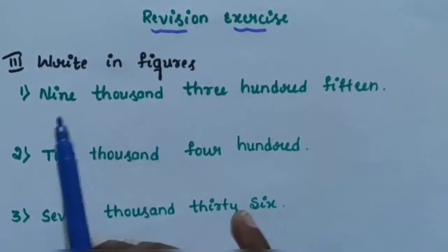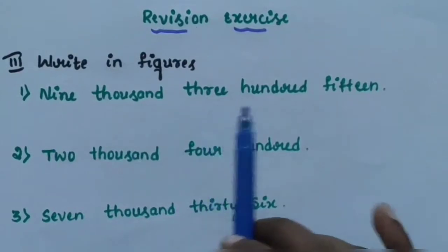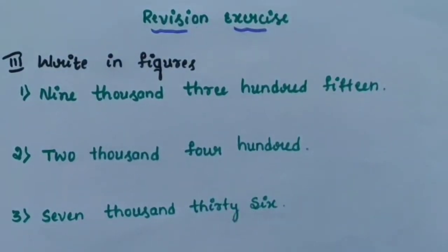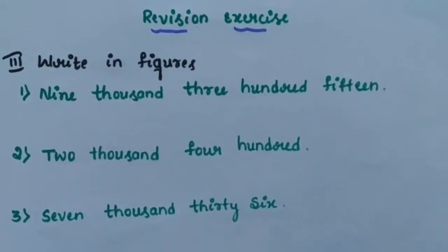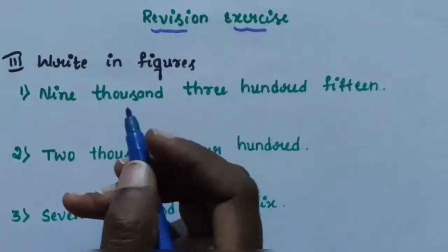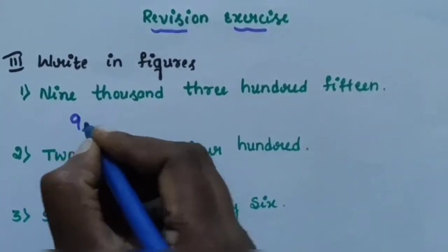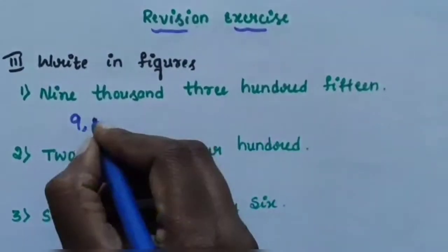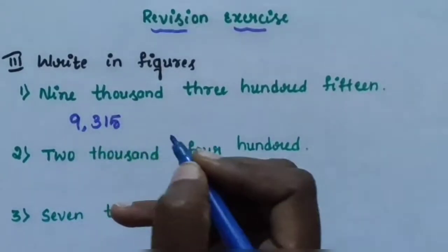9000 — 9 is in the 1000s place. 300 — 3 is in the 100s place. And 15 means 1 and 5: 1 is in the 10s place and 5 is in the units place. Writing the number: 9315 is the answer.